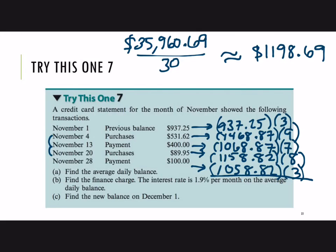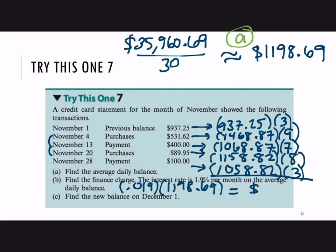Quickly look through the list of balances and make sure that number is somewhere in range — it's a little more than the first one and kind of in between the others, higher than some, lower than some, so it's a reasonable average. For part B, to find the finance charge, we need 1.9% of the average daily balance. So multiply 0.019 times $1,198.69 and round to the nearest cent — that's about $22.78.